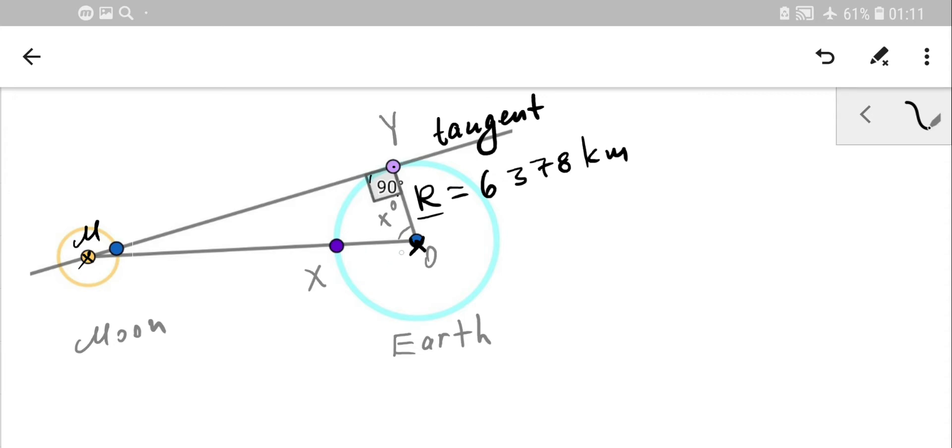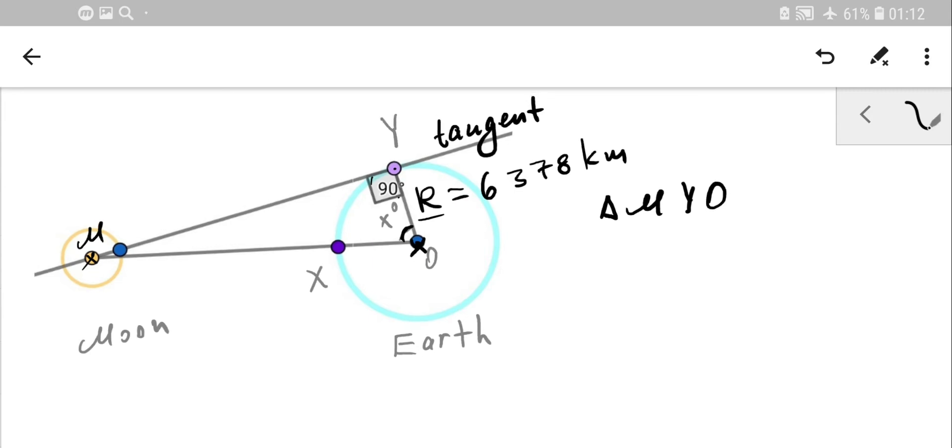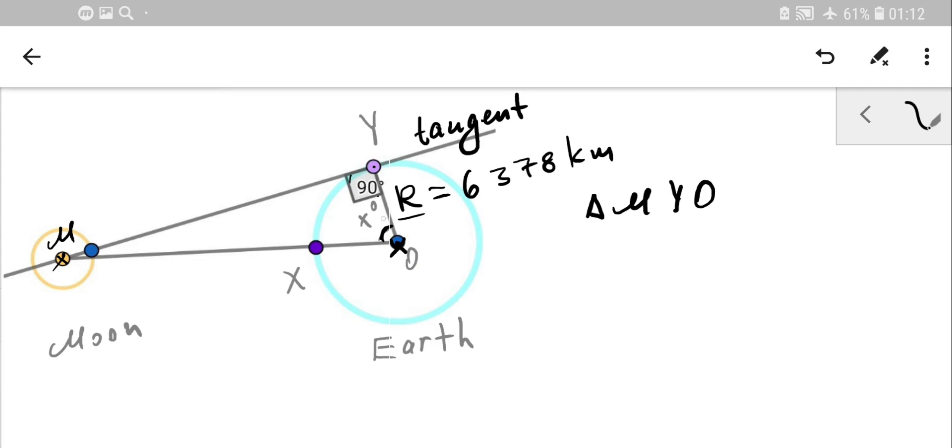We have line MX going through town X to the center of the Earth. So we have a right triangle MYO with the right angle at Y. If it's a right triangle, remember how we relate two sides with the angle. Using angle x which is 89 degrees—